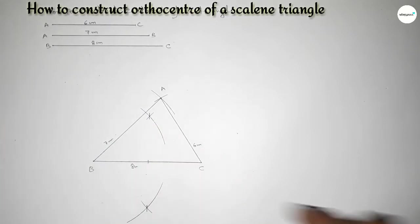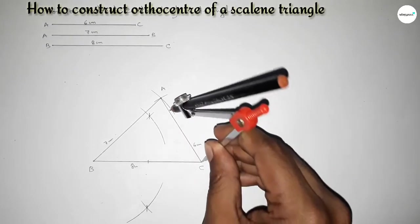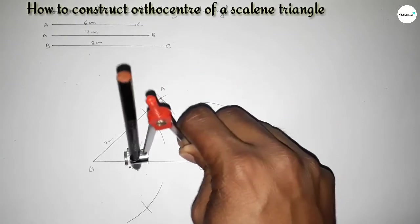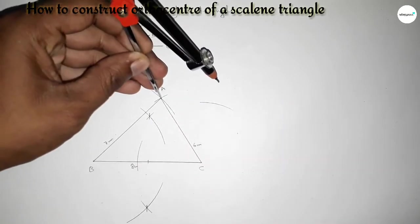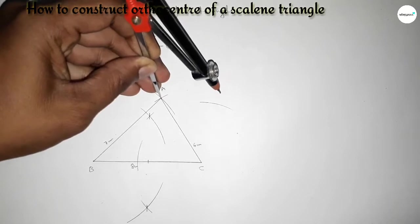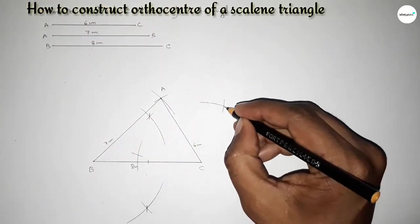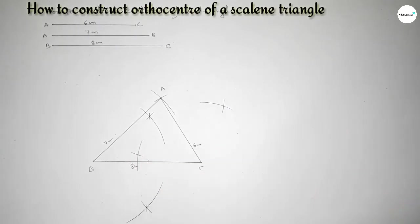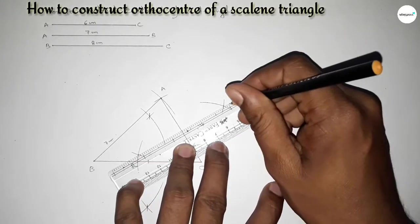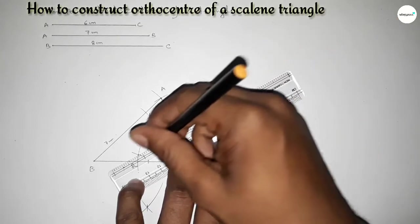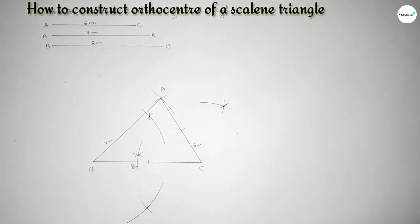Next we have to bisect line AB. Putting the compass on point A and taking greater than half, drawing an arc. Again with the same length, putting the compass on the other endpoint and cutting arcs. Both curves intersect at two points. Joining these two points bisects line AC at its midpoint.